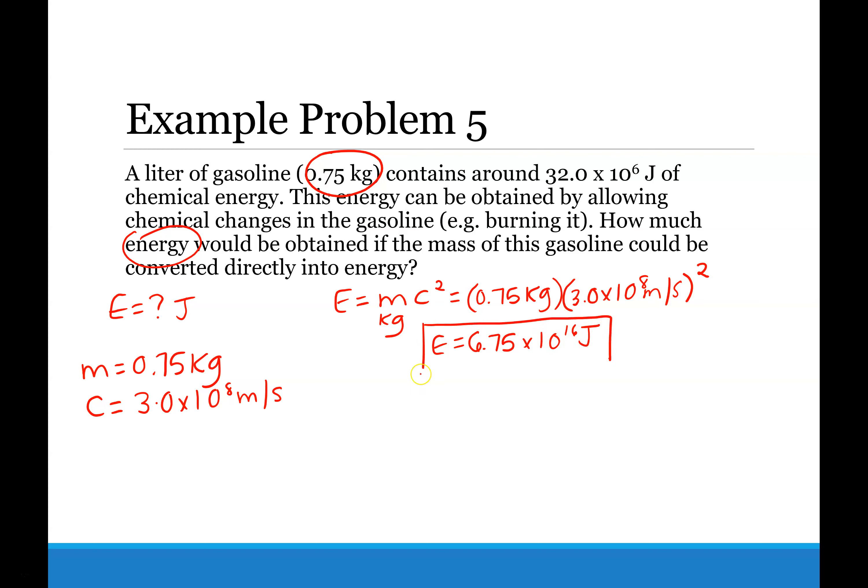And so that's the energy that you would have if you can convert all of the mass directly into energy. But we know that's not what actually happens, because what actually happens is that in the problem it tells you you get 32 times 10 to the 6 joules of energy.